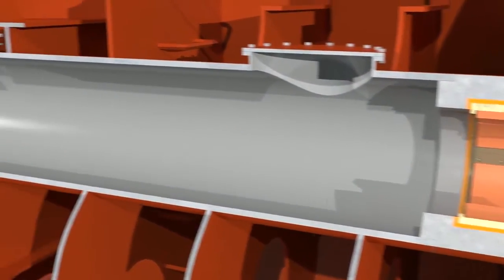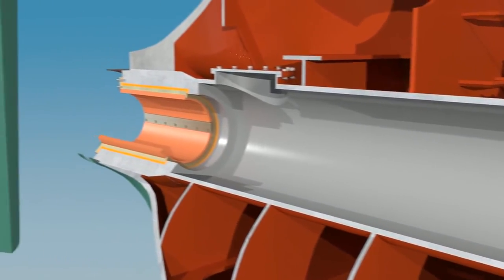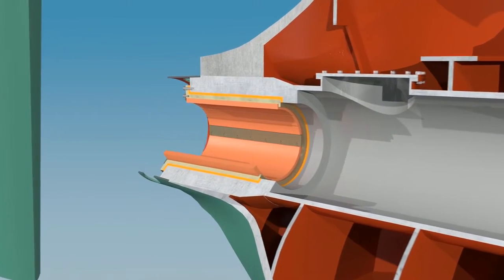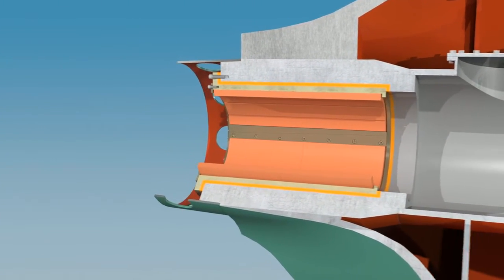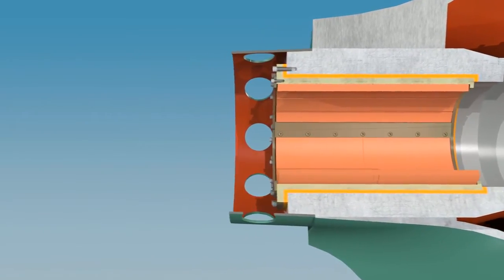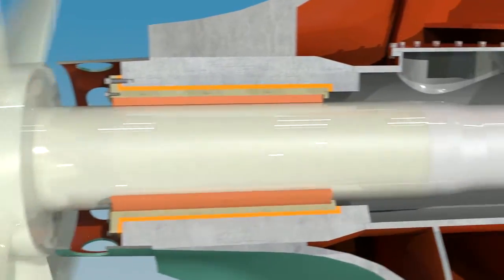Thordon bearings began offering water lubricated shaft bearing systems in 1965 and has continued to supply only water lubricated bearing systems. A seawater system is extremely simple and offers long life.